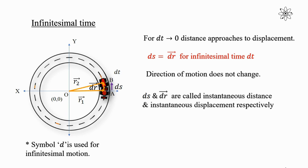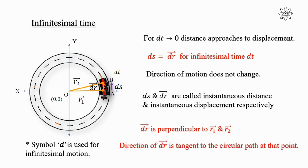ds and vector dr are called instantaneous distance and instantaneous displacement respectively. Vector dr is perpendicular to both vector r1 and vector r2. As we know from the geometry of a circle, the tangent is perpendicular to the radius. Therefore the direction of vector dr is tangent to the circular path at that point.